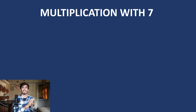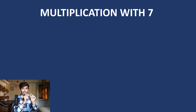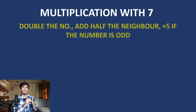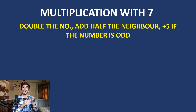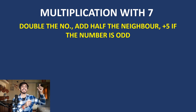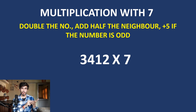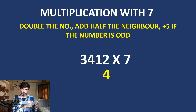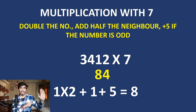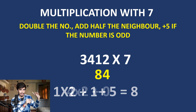Now let us learn the key for multiplying by 7. The key for 7 is: double the number, add half of its neighbor, and add 5 if the number is odd. This is similar to the key for 6, with the addition of doubling the current number. For example, with a number starting with 2: double 2 is 4, and there is no neighbor, so just 4.